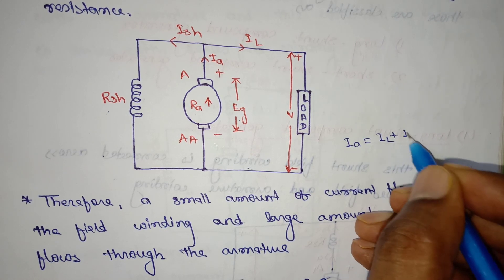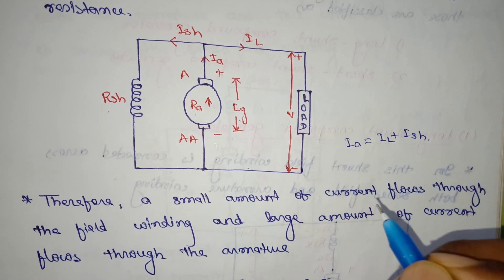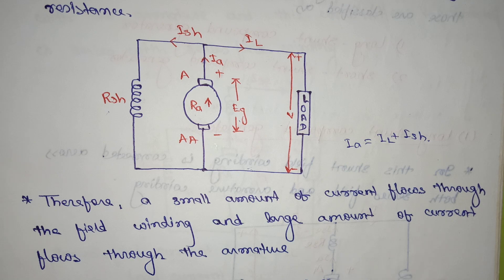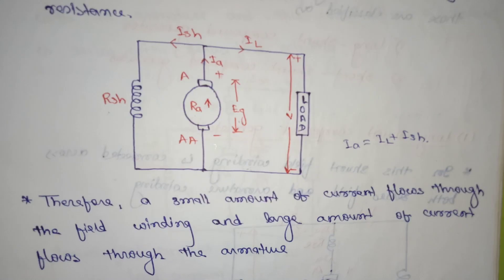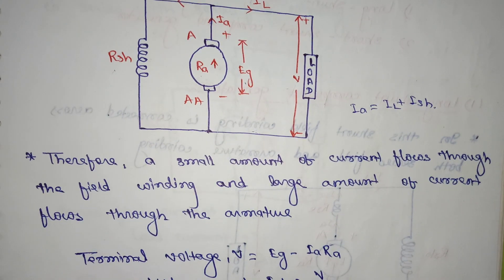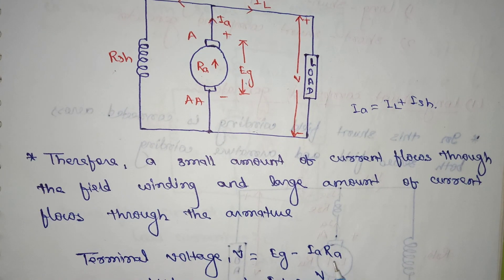Now we have to find the terminal voltage. V is equal to Eg minus Ia Ra. This is the terminal voltage equation.